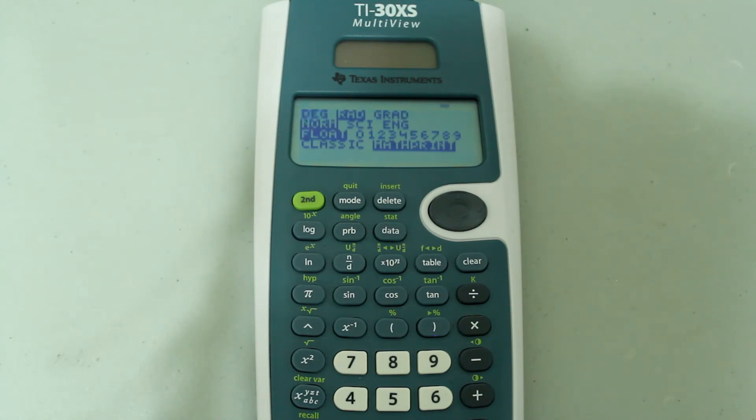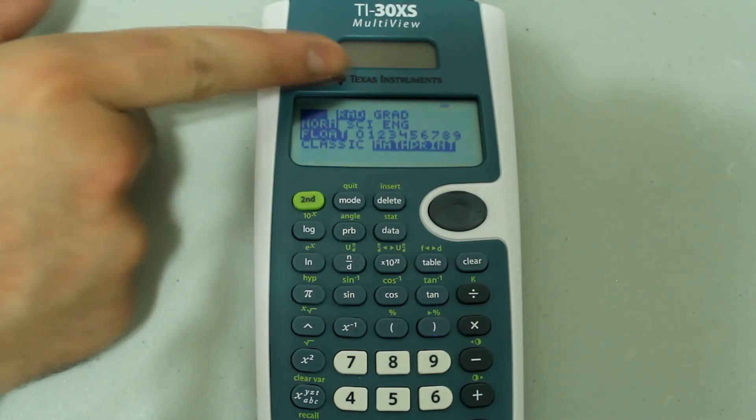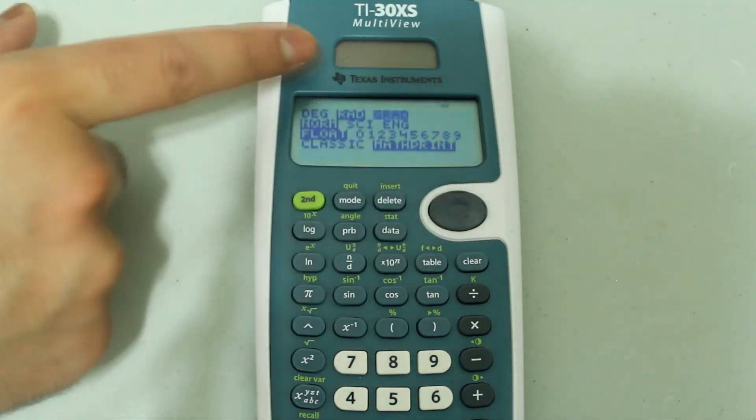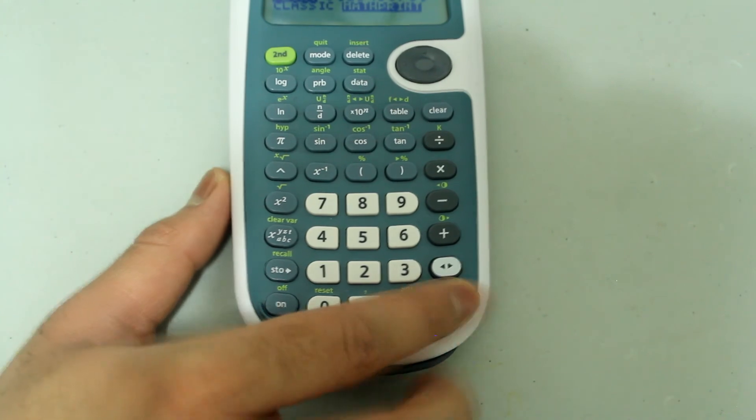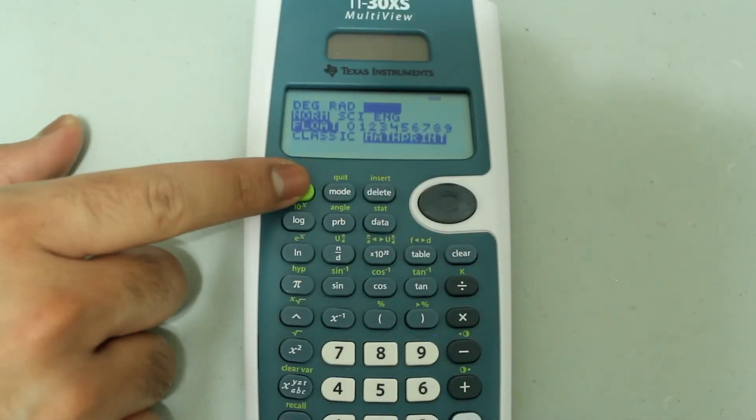This basically means that there are 100 gradients in 90 degrees. So right now I'm going to select the gradient option. So once the cursor is blinking on gradient, press enter, and then quit the mode screen.